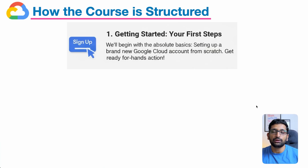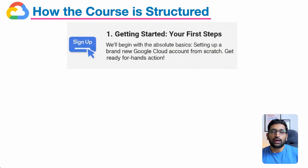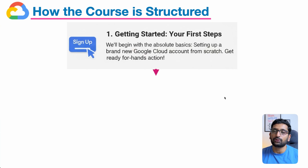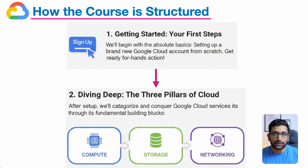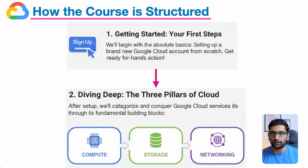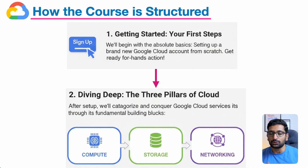Now let's talk about the content structure of this Google Cloud course. We are going to begin with the signup process, taking a fresh account and performing the signup on Google Cloud. After signup, we'll look at the further components of Google Cloud services, which I've divided into three categories: compute, storage, and networking.